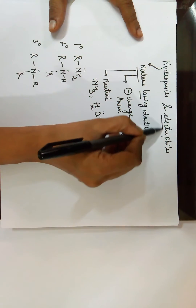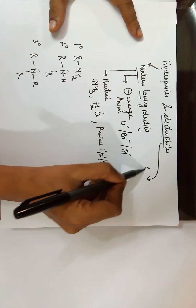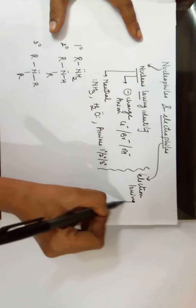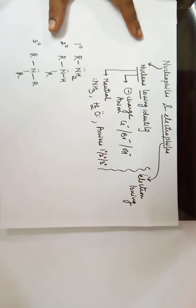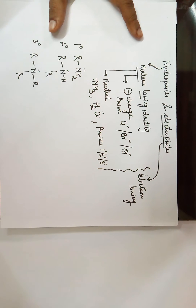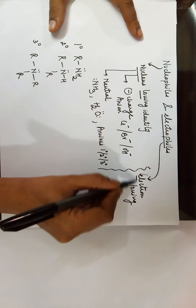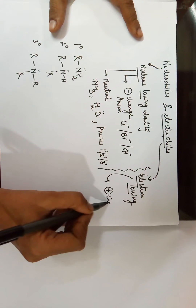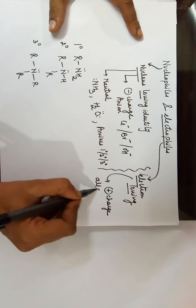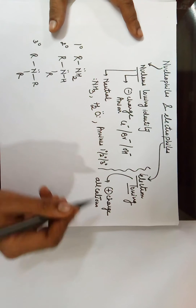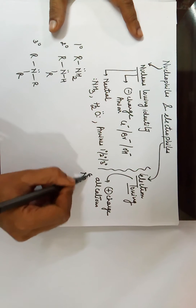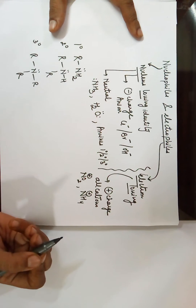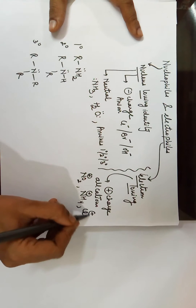Coming to electrophilic identities: an electrophile is electron-loving. Since electrons are negatively charged, an electron-loving identity must be positively charged. The first category of electrophiles is positively charged ions — all cations. For example, the nitronium ion, ammonium ion, or Cl⁺ — anything with a positive charge can be called an electrophile.